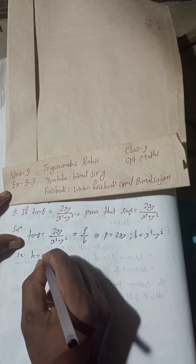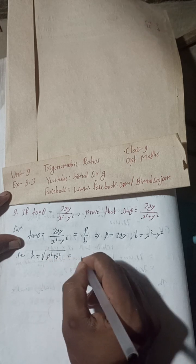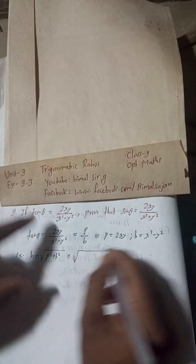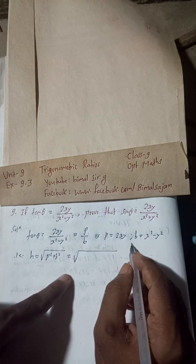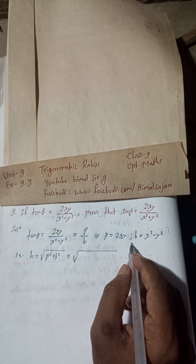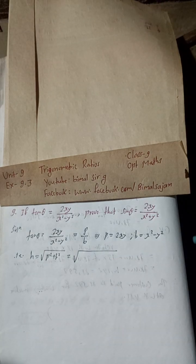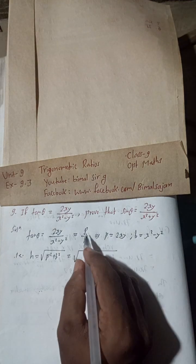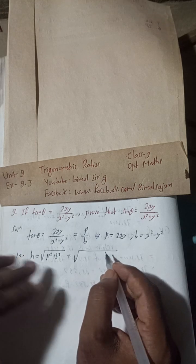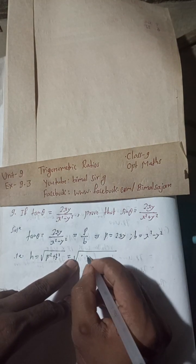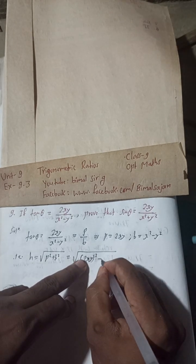Therefore, hypotenuse H = √(P² + B²). Now P² = (2xy)², and B² = (x² - y²)². So we expand P² + B² as (2xy)² + (x² - y²)².